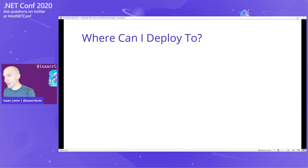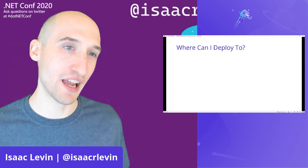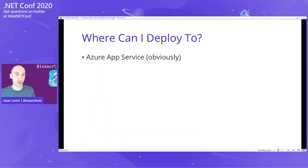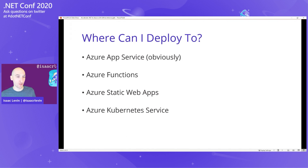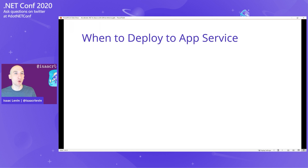We talked about what Actions are and the different ways you can set up .NET in your runners. Where can you deploy to? I work for Microsoft on the Azure team, so I'm going to talk about some of the cool ways to deploy to Azure. You can deploy to App Service, Azure Functions, the new Azure Static Web Apps — which now support Blazor and .NET 5 — Azure Kubernetes Service, and really anywhere else: VMs, storage, wherever. GitHub Actions allows you to do all of that.